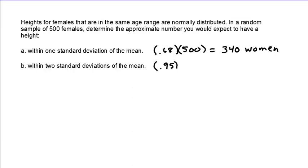So that's 0.95 times the 500 and when I throw that into my calculator that is going to give me 475 women is what I would expect to be within two standard deviations of the mean. Enjoy your homework. Talk to you soon.